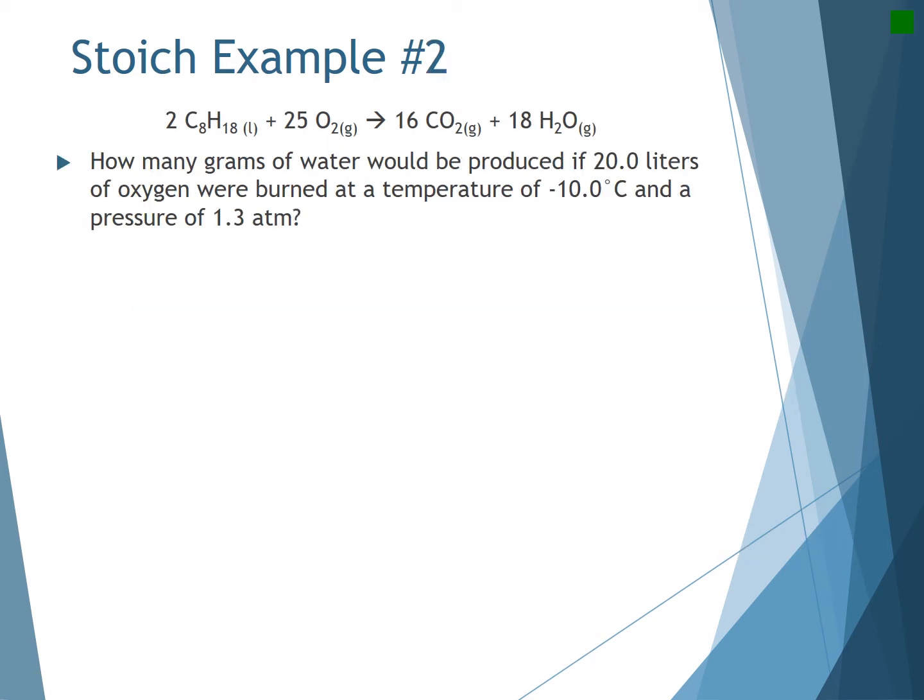Let's try the next one. How many grams of water would be produced if 20 liters of oxygen were burned at a temperature of negative 10 and a pressure of 1.3 atm? So right now I see a V, a T, and a P, and that is all due to the conditions that oxygen is set.